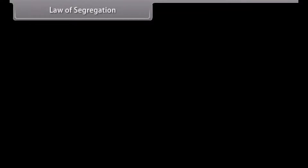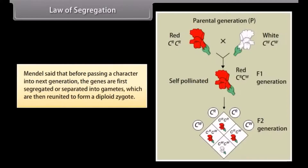Law of Segregation: Mendel said that before passing a character into the next generation, the genes are first segregated or separated into gametes, which are then reunited to form a diploid zygote.